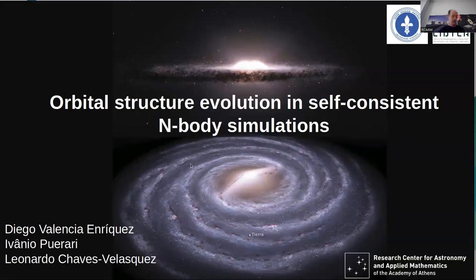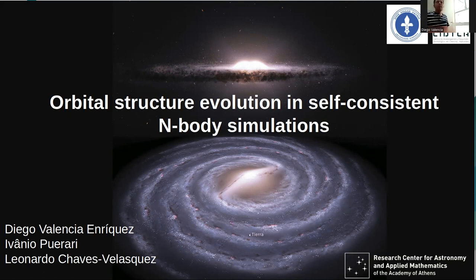Welcome everyone. It is a pleasure to have Diego Valencia Enriquez with us today. He has come from Colombia. He is working on body simulation orbital structure evolution of structures from galaxies — bars, spirals, etc. He did his PhD at INAOE in Cholula, close to Mexico City, with Ferrari, and since 2020 he has been at the University of Mariana in Colombia.